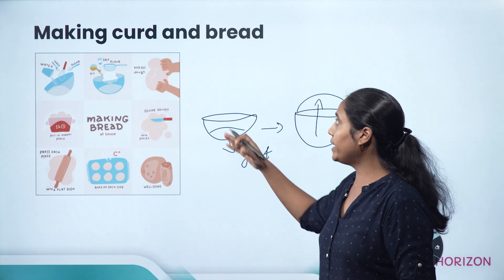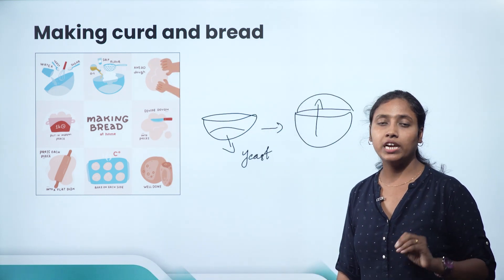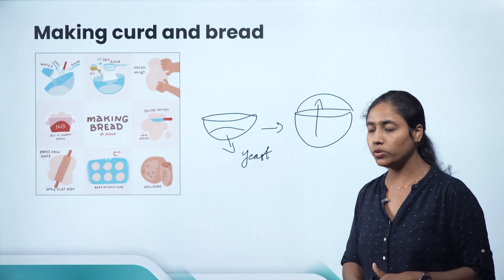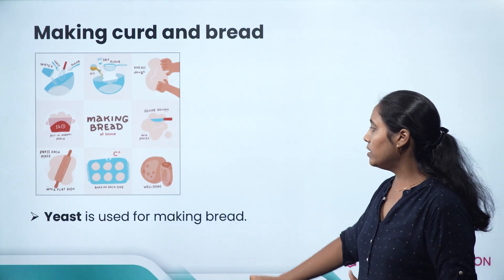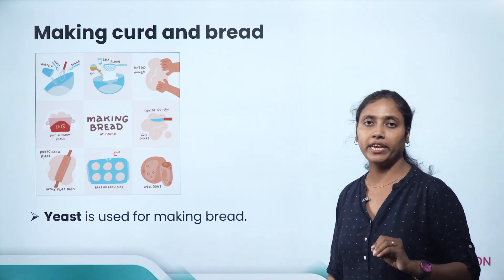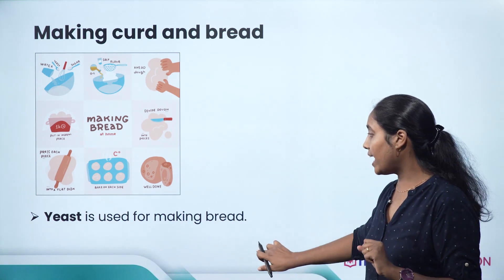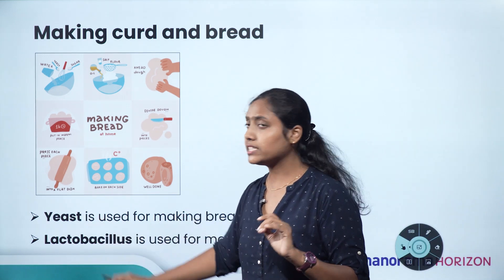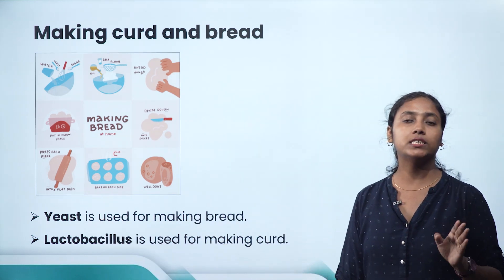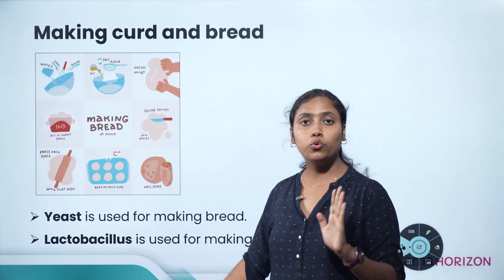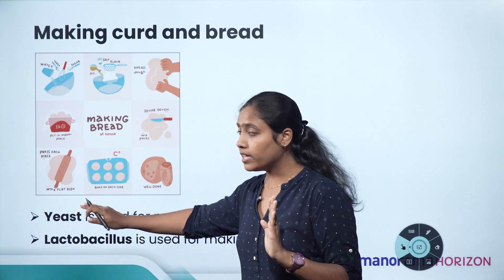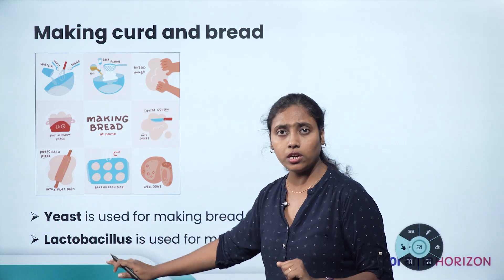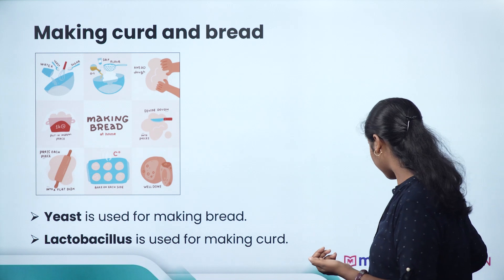Similarly, for making curd, Lactobacillus is used. Lactobacillus helps to curdle the milk into curd — it converts milk into curd. Yeast is a fungi and Lactobacillus is a bacteria — both are unicellular. Both help in the process of fermentation. Lactobacillus forms lactic acid, while yeast forms alcohol and carbon dioxide.